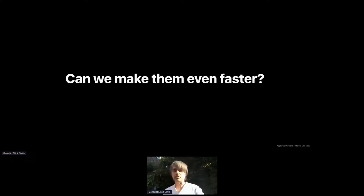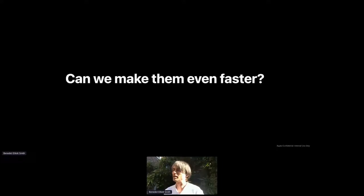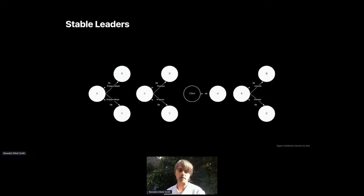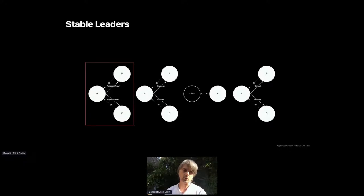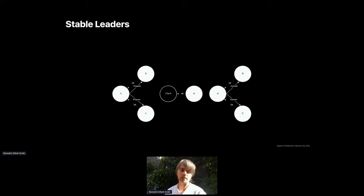So why stop there? Can we make them even faster? Raft is a very popular protocol today, but the comparable protocol in the Paxos family — which was originally meant to be called Paxos I think by Leslie Lamport — is Multi-Paxos. That's essentially where you have a stable leader where a single replica coordinates all of the transactions, which allows you to remove the initial round for writes and reduce reads to one round trip and remove some contention. It seems like a straightforward thing to pursue, but there are some downsides and reasons why we might want to go a different route.